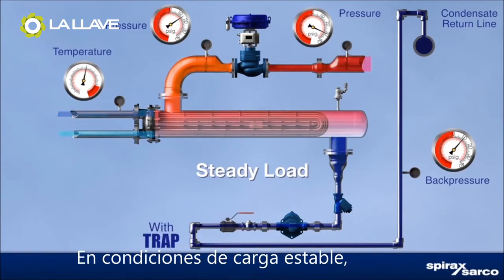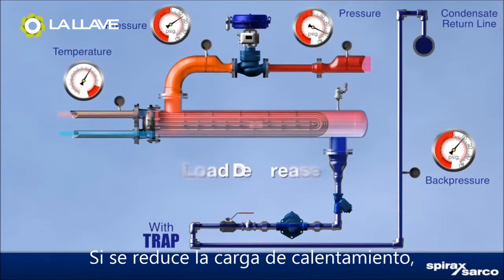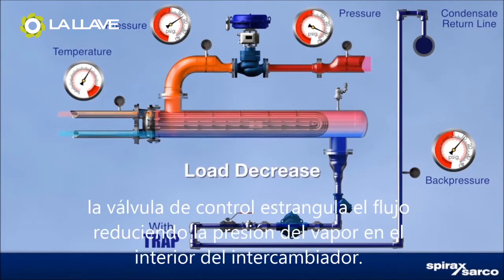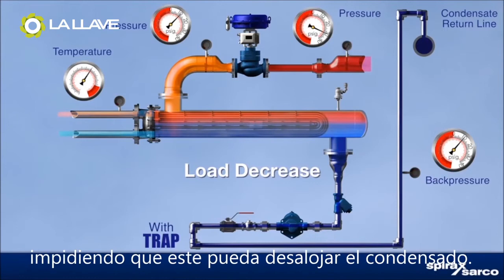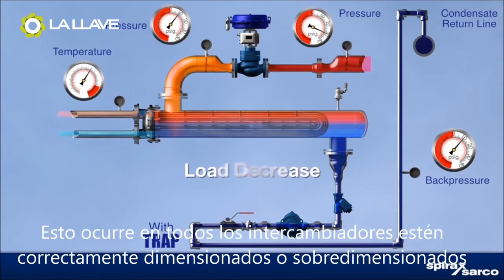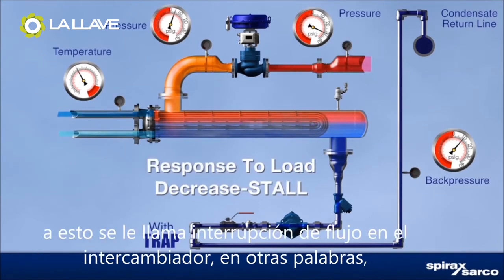Under a steady high load, differential pressure removes the condensate from the heat exchanger. Under reduced heating load, the control valve throttles down, reducing the steam pressure inside the heat exchanger. This also reduces the differential pressure across the steam trap, making the trap unable to remove the condensate. This happens in all heat exchangers whether properly sized or oversized, causing condensate to flood the steam space — known as heat exchanger stall.